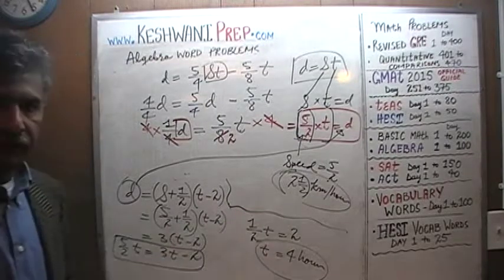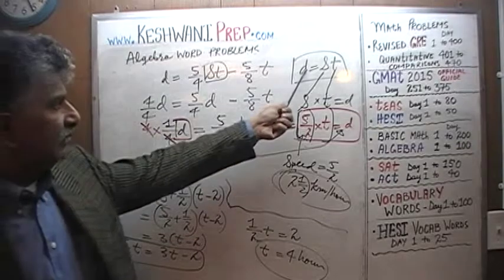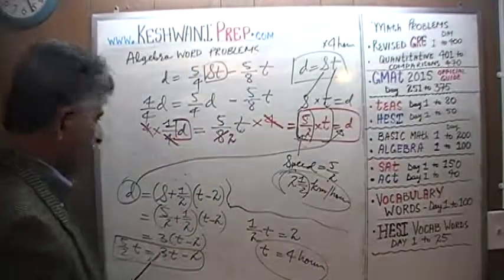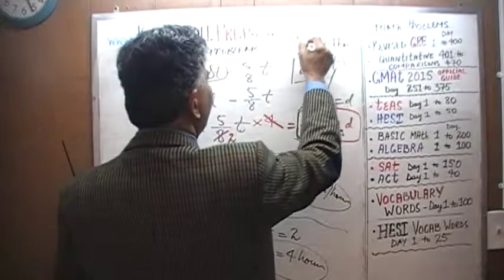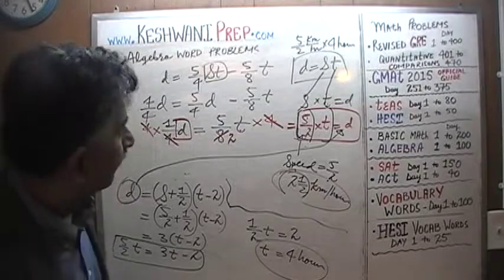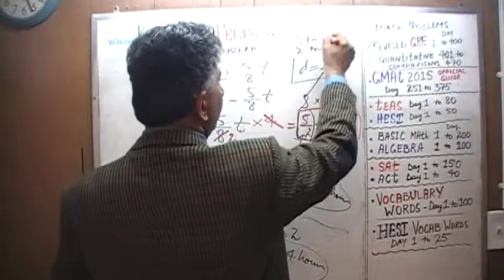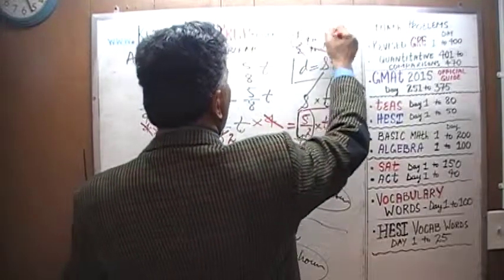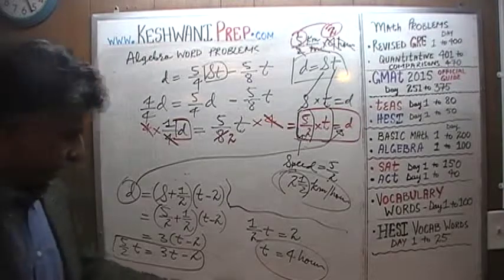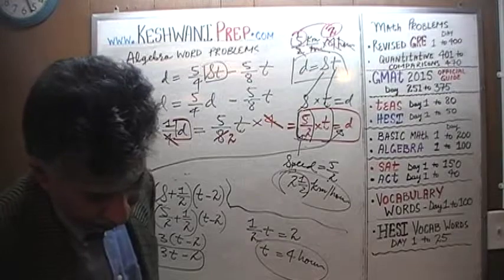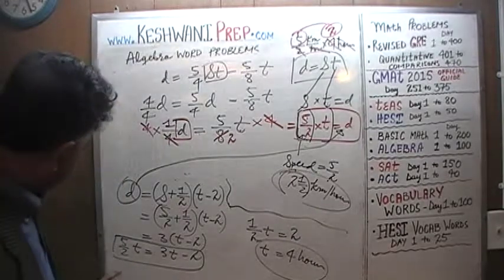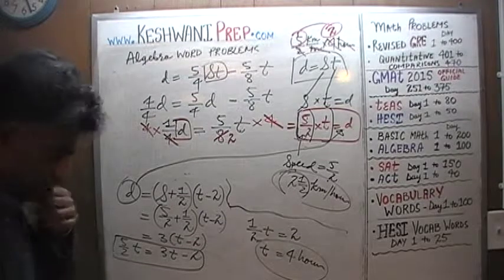We know the speed and we know the time. The question was: how far did I walk? But wait — I'm going to check my notes. In my notes I had 30 kilometers, but on the board we got something different. I made a mistake. I need to fix it with a red pen.